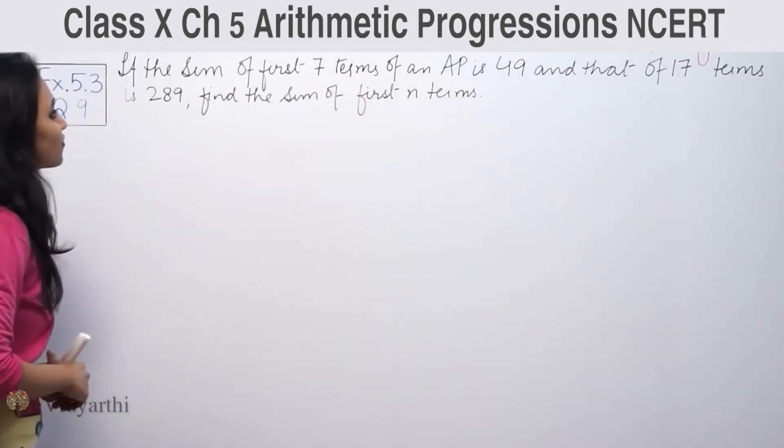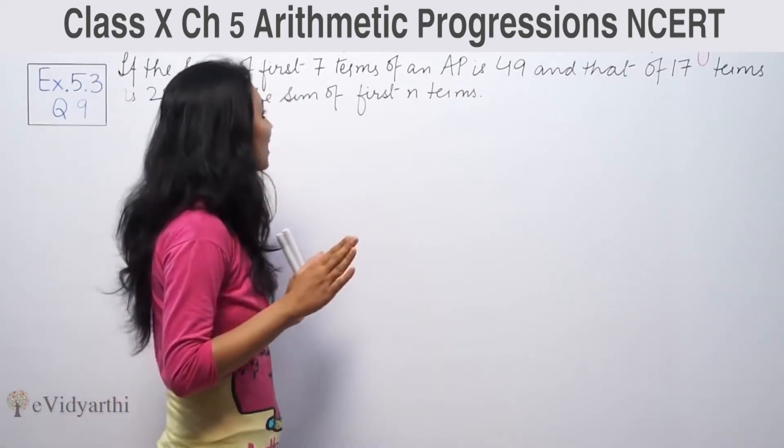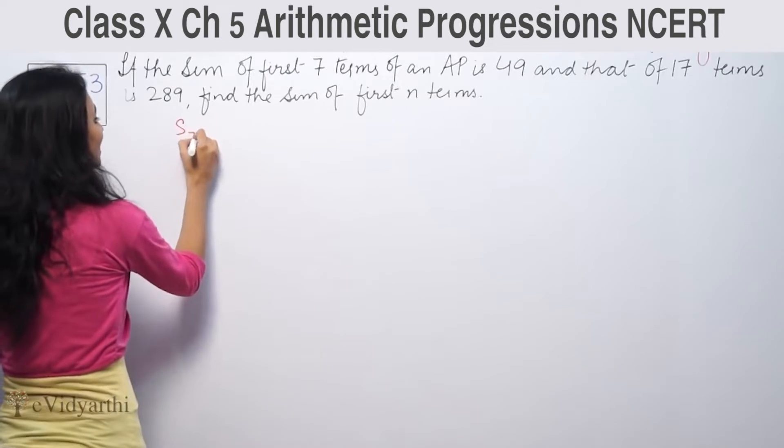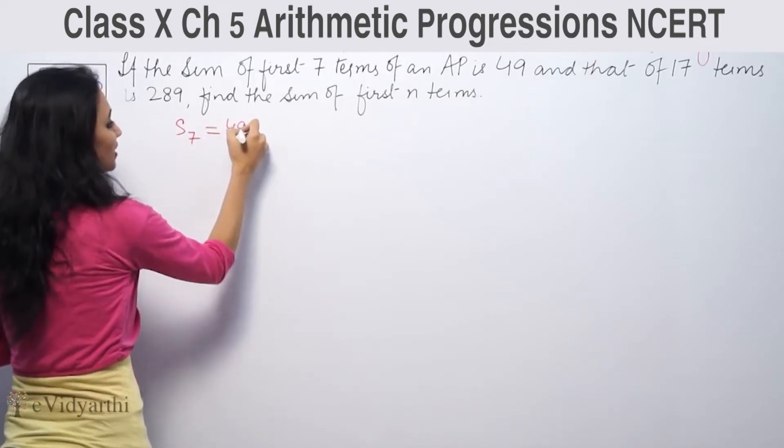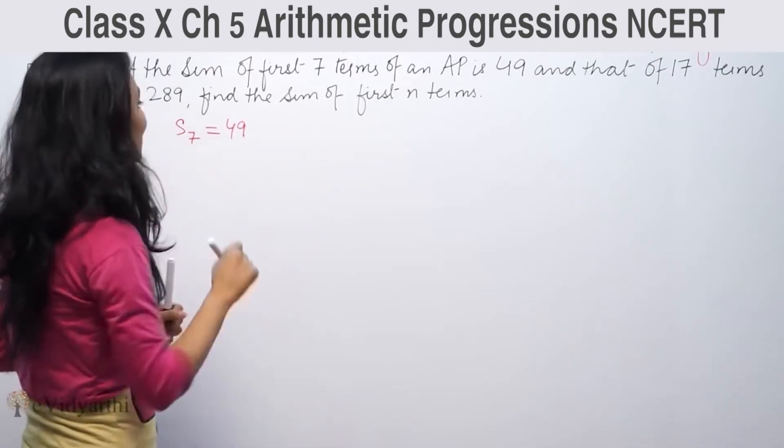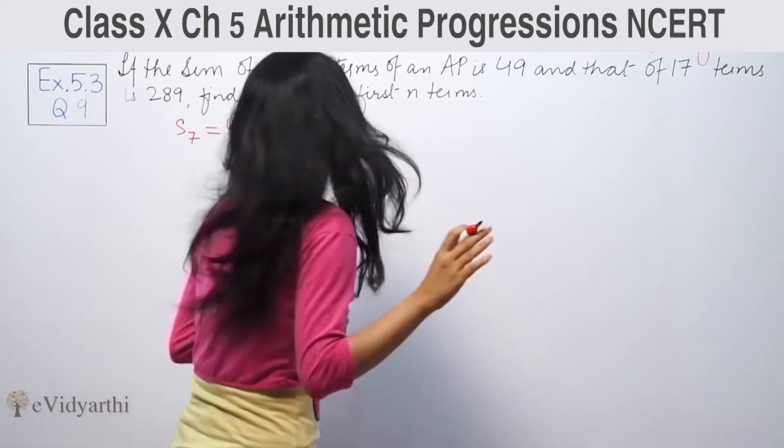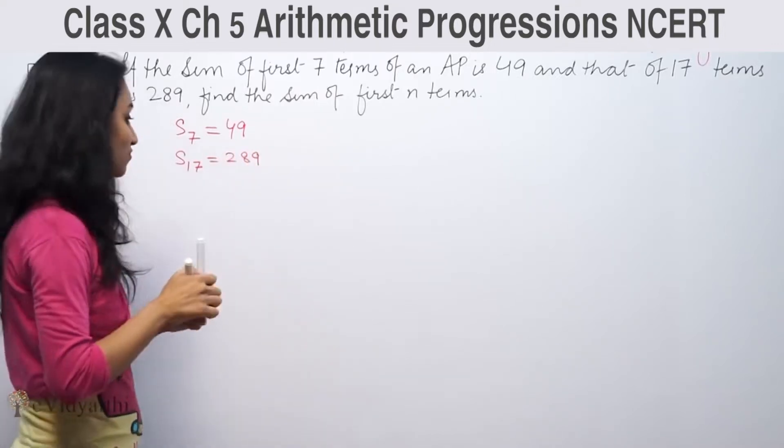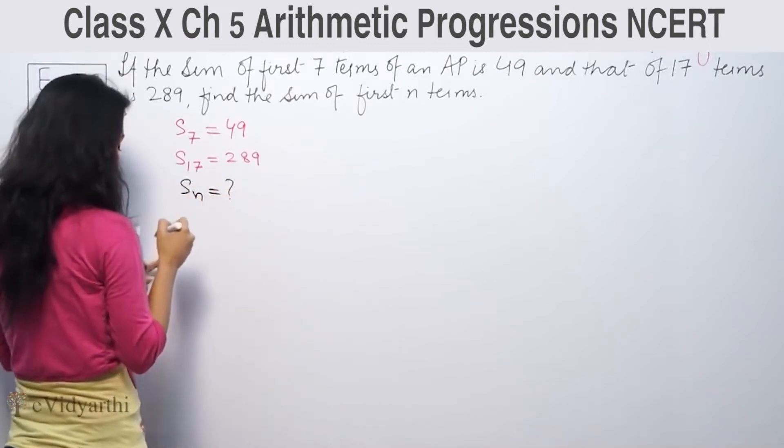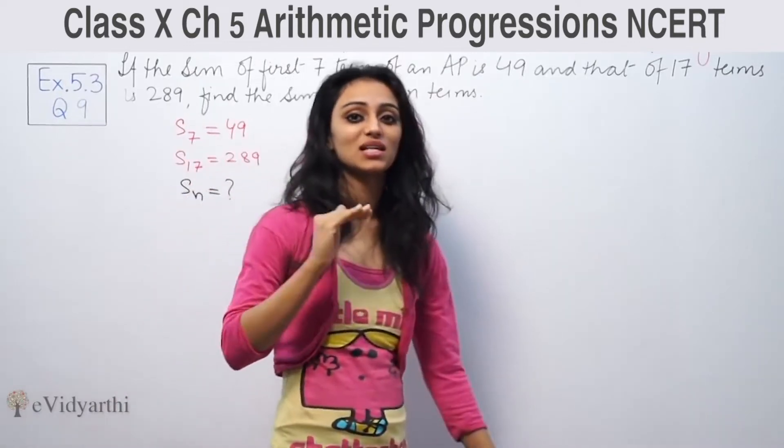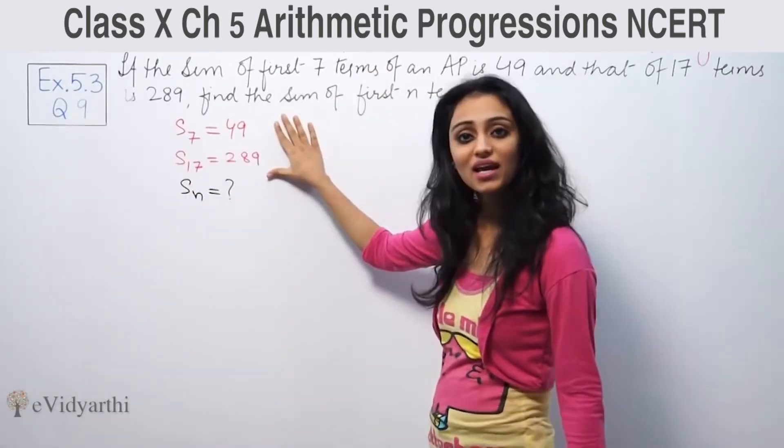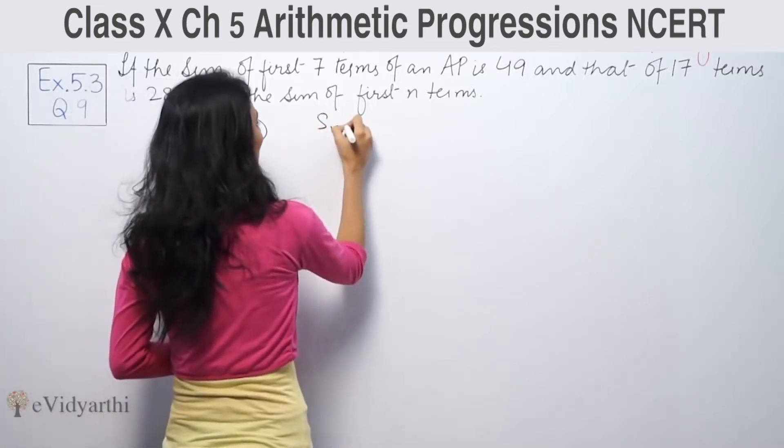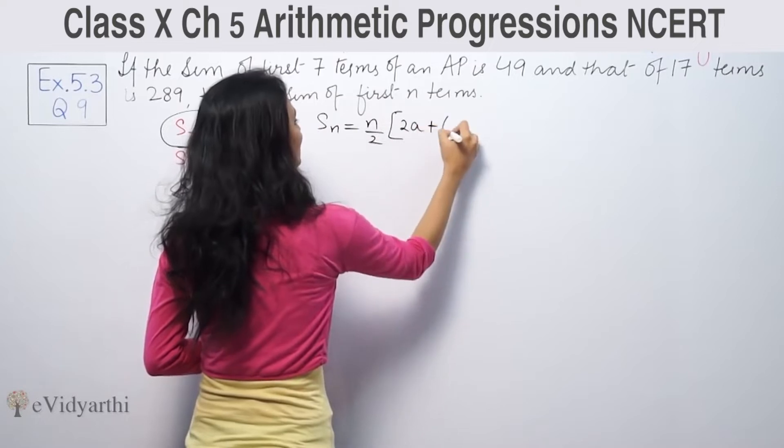The problem states: the sum of first 7 terms of an AP is 49, and that of 17 terms is 289. Find the sum of first N terms.